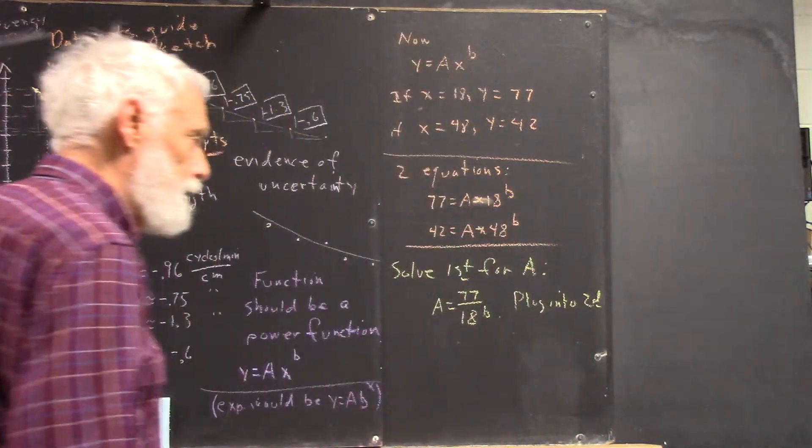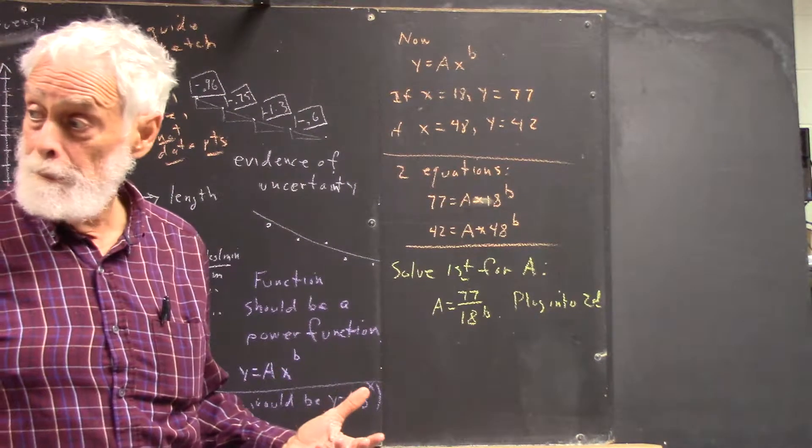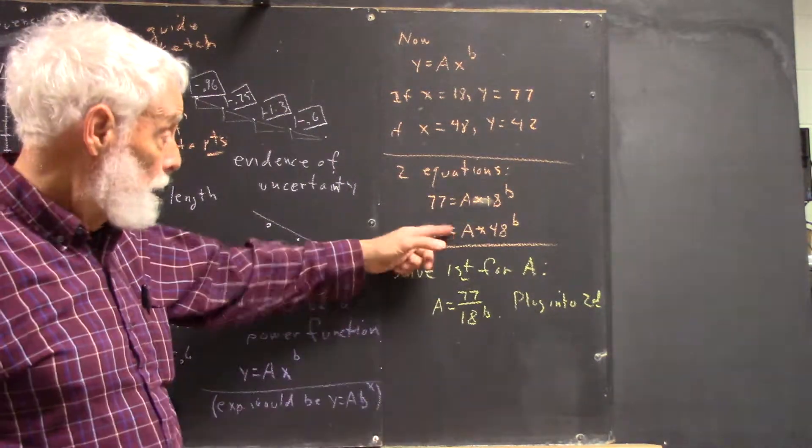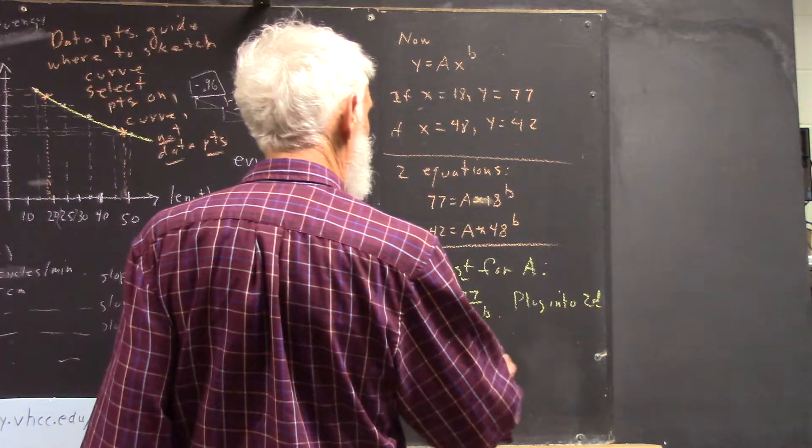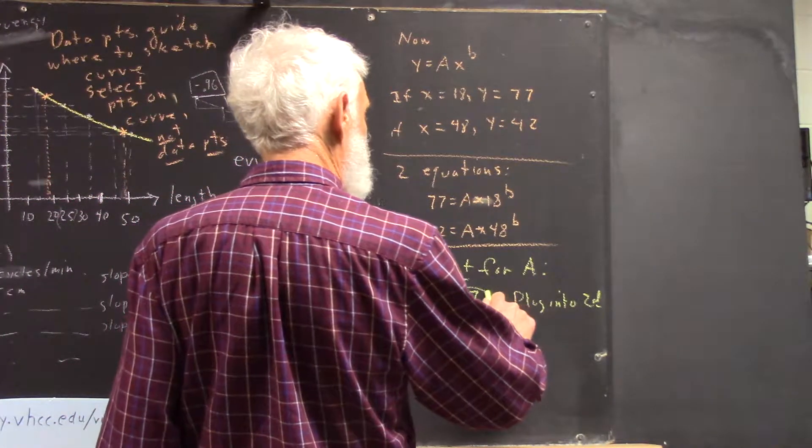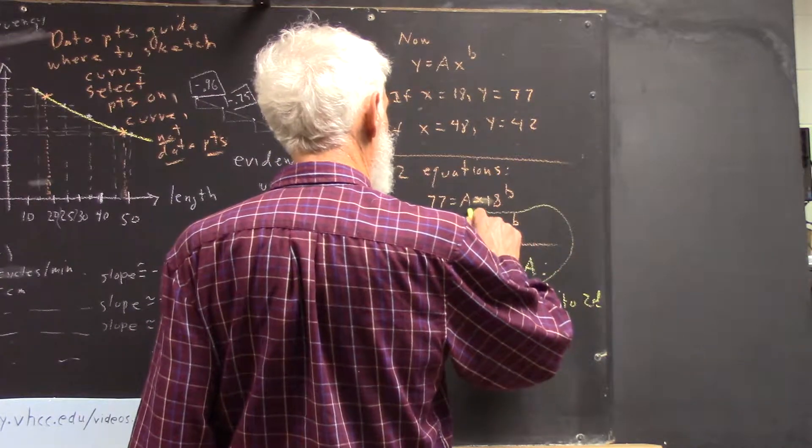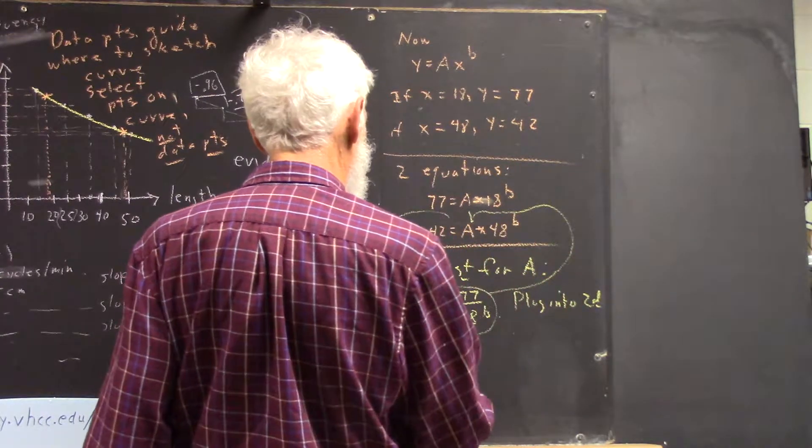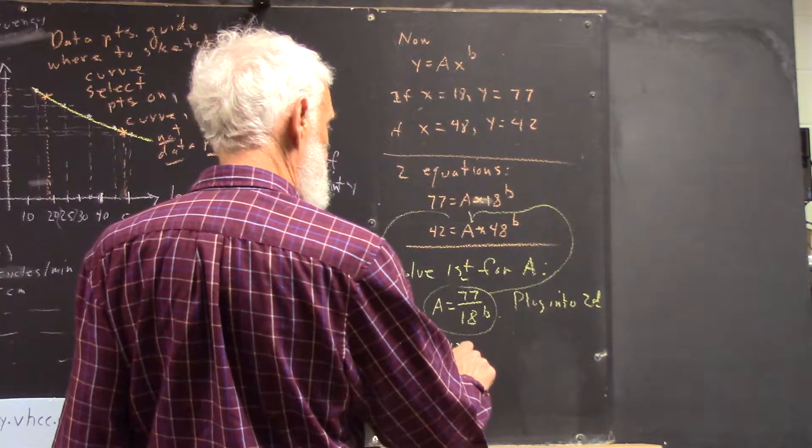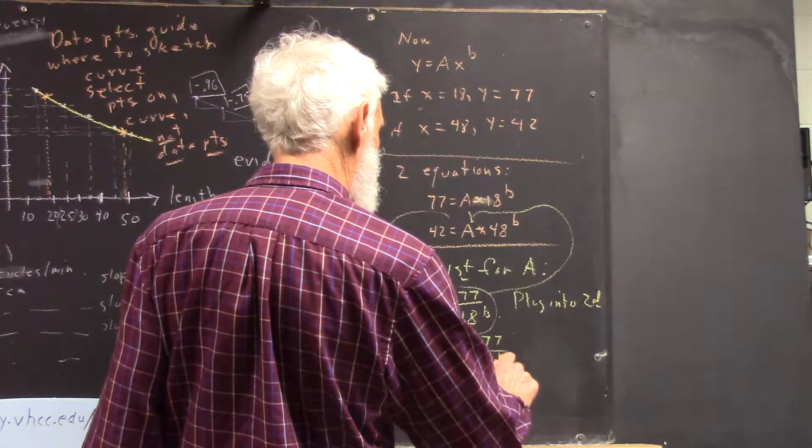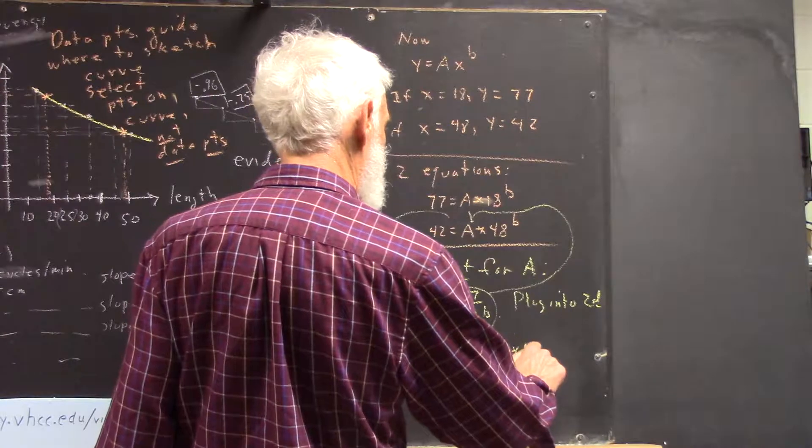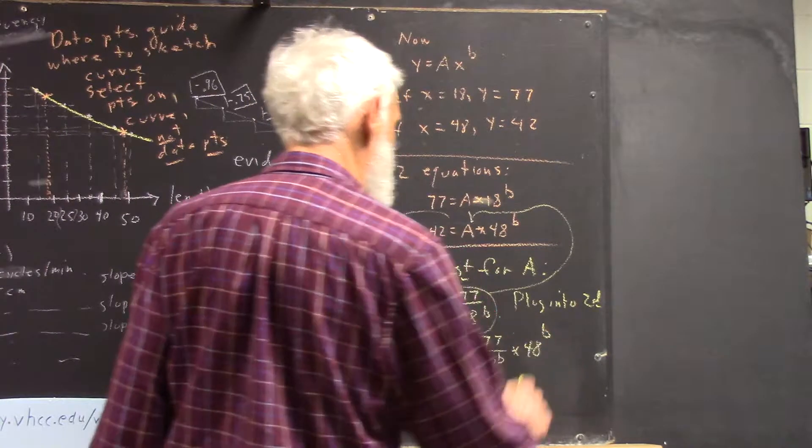Then we plug that into the second equation. Where are we going to plug that in? For A. For A, right? So, as I've done many times with arrows, I say, okay, we take this and we put it here, and out of this we get an equation, 42 equals 77 over 18 to the B times 48. So the B's cancel out? To the B, no.